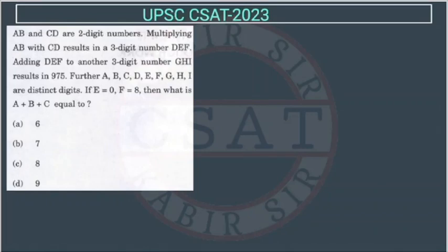Now, let's see this question from UPSC 2023 paper. AB and CD are two-digit numbers. Multiplying AB with CD results in a three-digit number. So there are two numbers AB and CD. We are multiplying them and we are getting a three-digit number. What is that number we are getting? We are getting DEF.